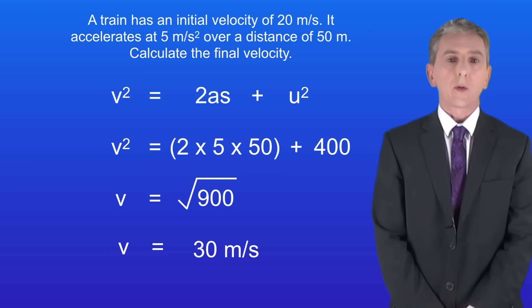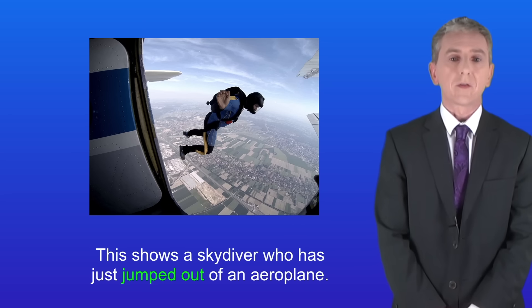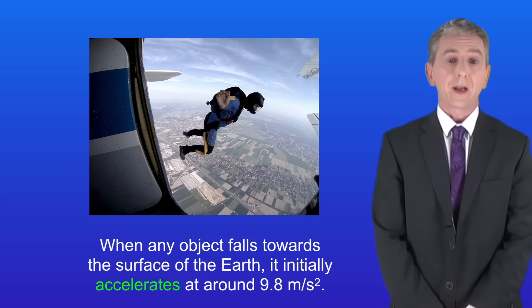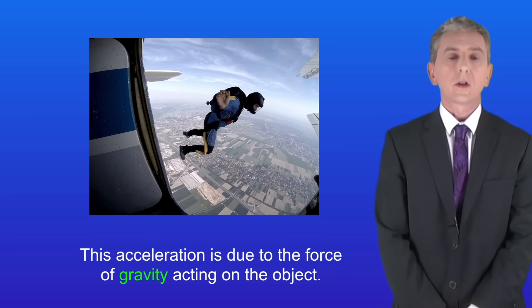Ok we're going to finish now by looking at how objects accelerate towards the earth. I'm showing you here a skydiver who has just jumped out of an aeroplane. Now the key fact is that when any object falls towards the surface of the earth it initially accelerates at around 9.8 metres per second squared. This acceleration is due to the force of gravity acting on the object.